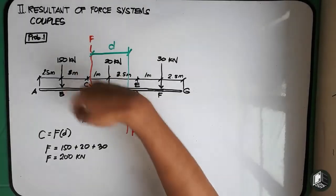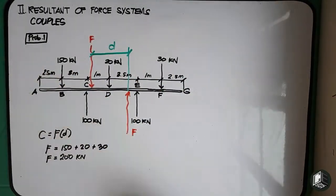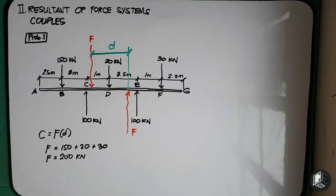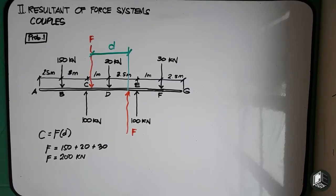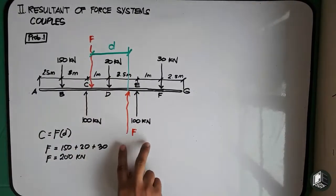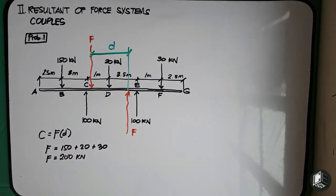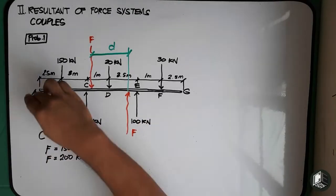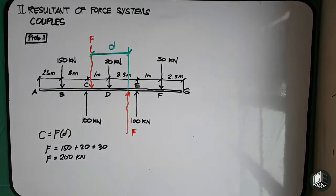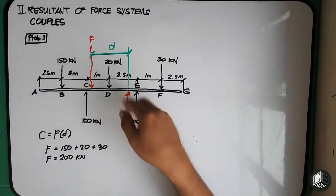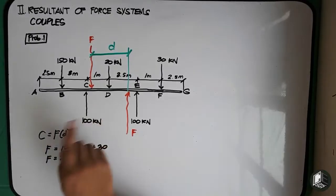That's why it will cause a couple effect for this bar A, B, C, D, E, F, and G. So we determine the distance d. There are two approaches to the solution. We get the distance or position of the downward force f from point A, and the position of the upward force from point A, then subtract them to get distance d. Or we take the moment at C or any point on the bar, then equate it to C equals f multiplied by d.